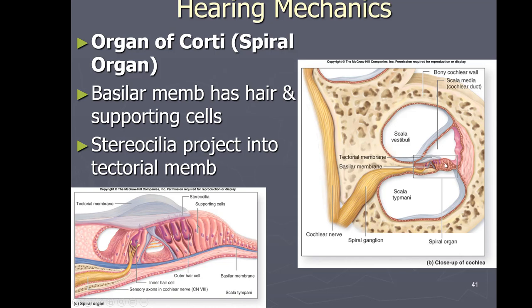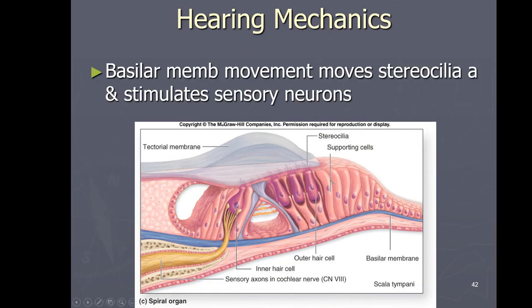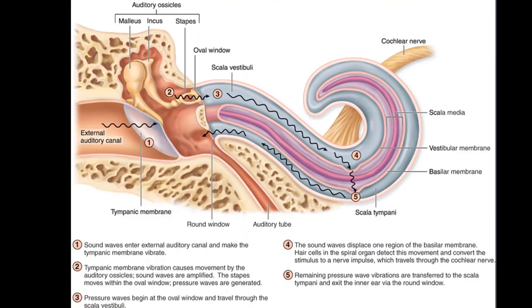The concept is similar to the vestibule: hair cells with the tectorial membrane on top, all on the basilar membrane. Something causes the basilar membrane to move, the tectorial membrane moves the cilia on the hair cells, and action potentials are sent to the brain. Sound waves come in through the ear, hit the tympanic membrane causing it to vibrate, which moves the malleus, incus, and then the stapes.